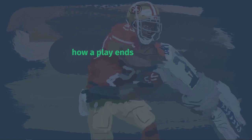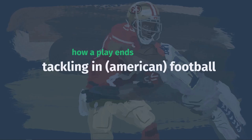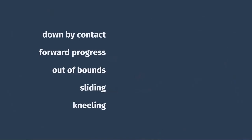Let's look at how a play in American football will end, and more specifically what constitutes a tackle. This is a key concept to understand because except for a few cases like a team scoring or an incomplete pass, pretty much every other offensive play will end in one of these ways. Each time a play ends, wherever the ball is when that player goes down will become the line of scrimmage for the next play. We'll look at five different ways to end a play, but 98% of the time it's going to be one of the first three.